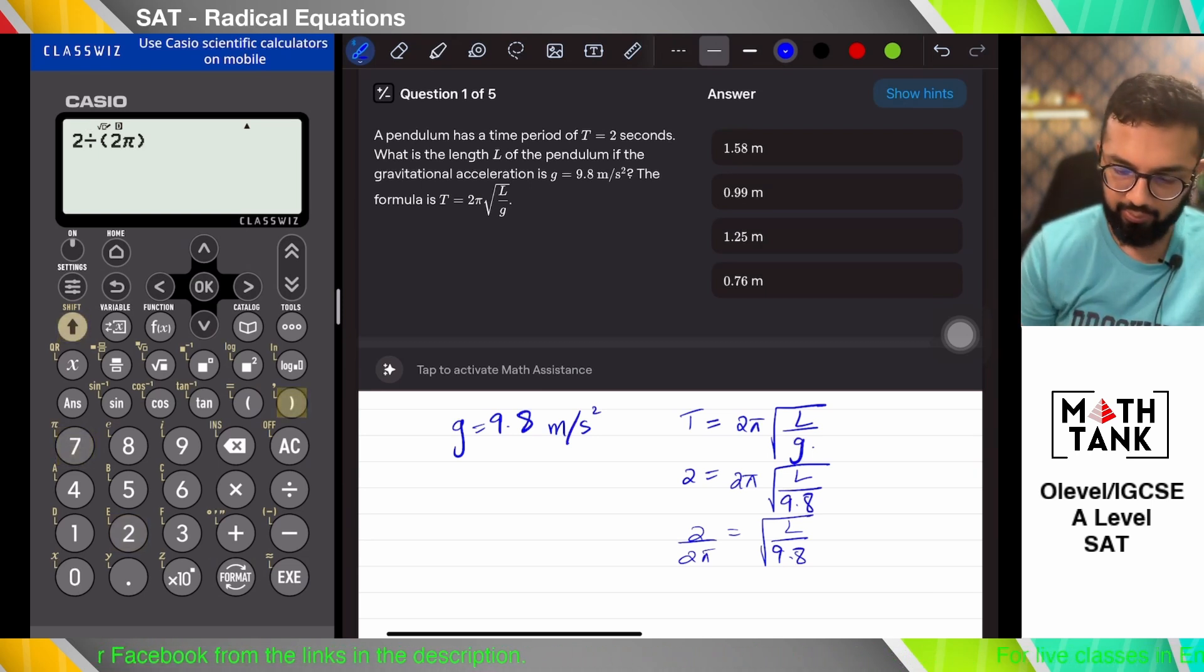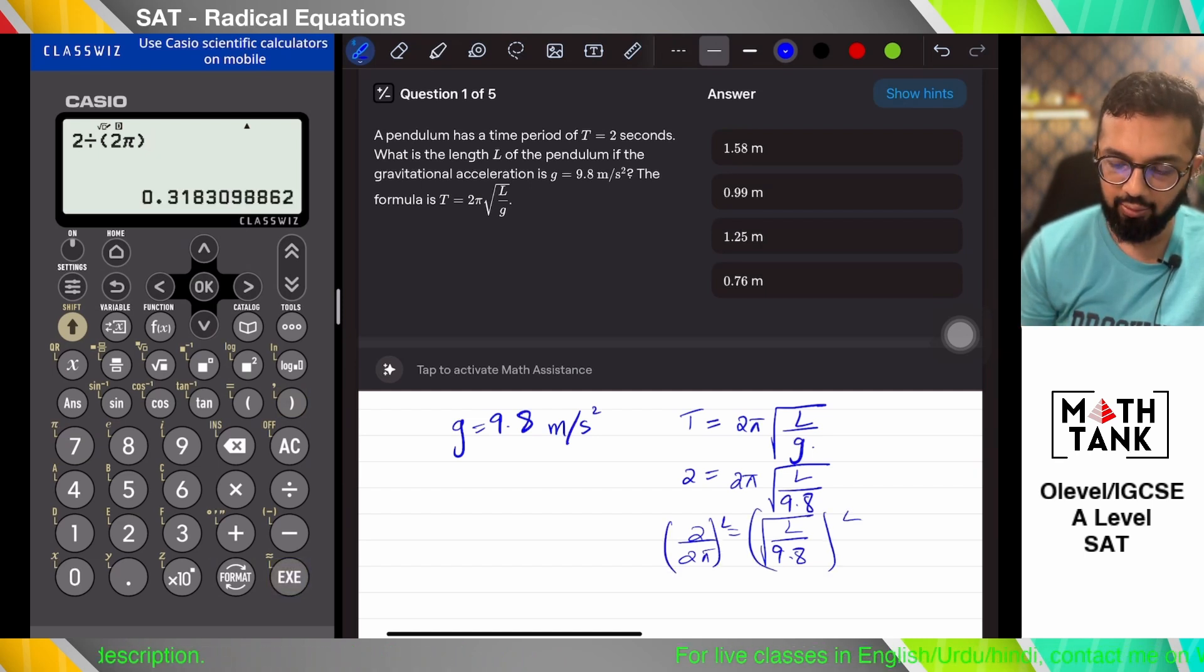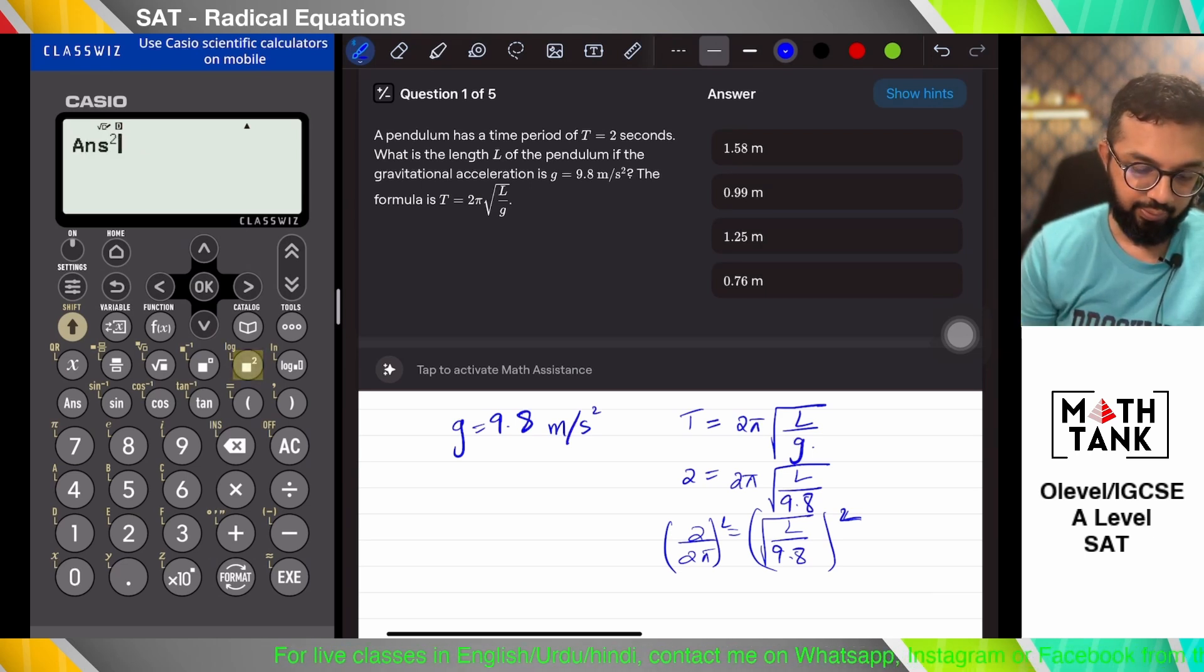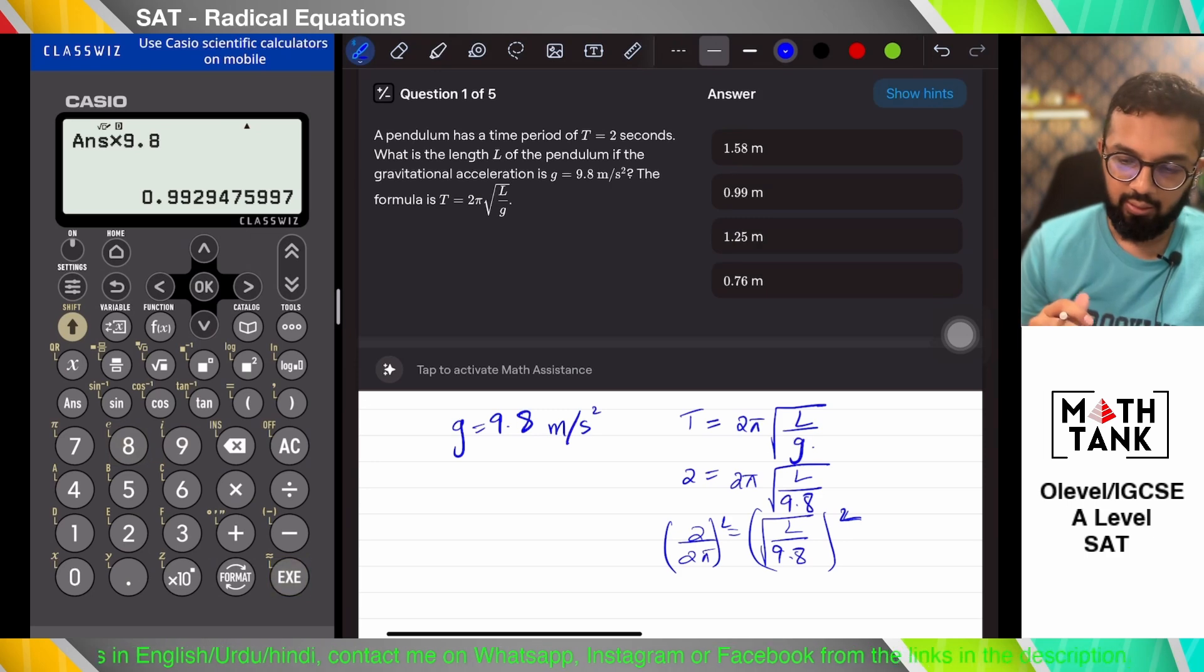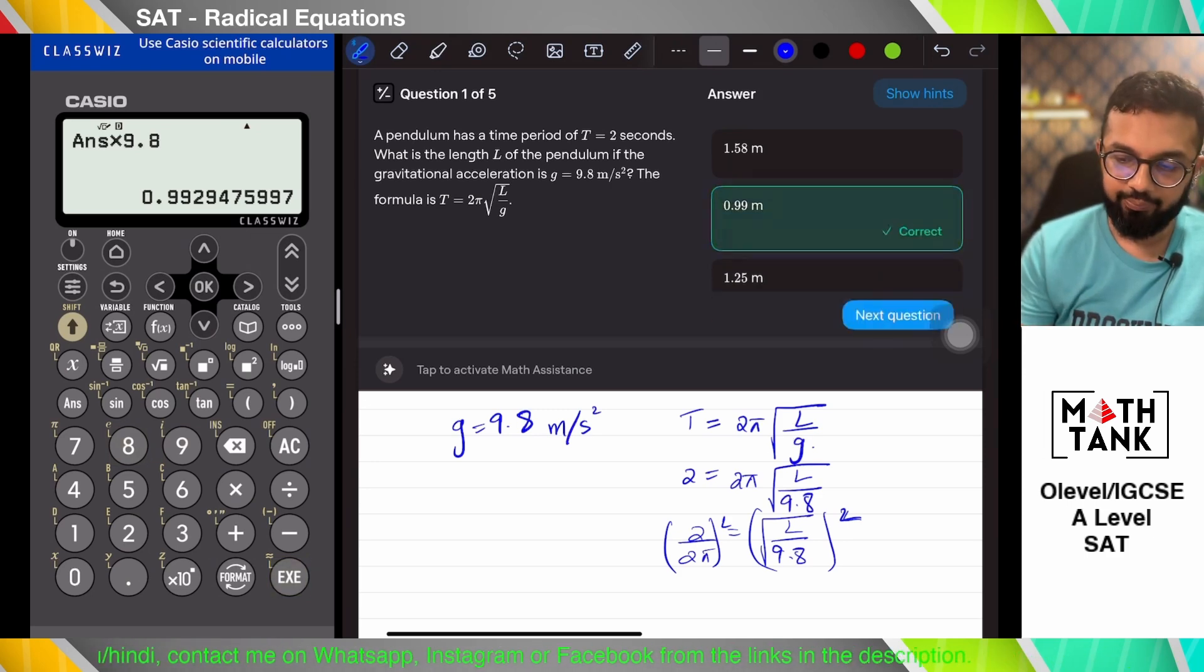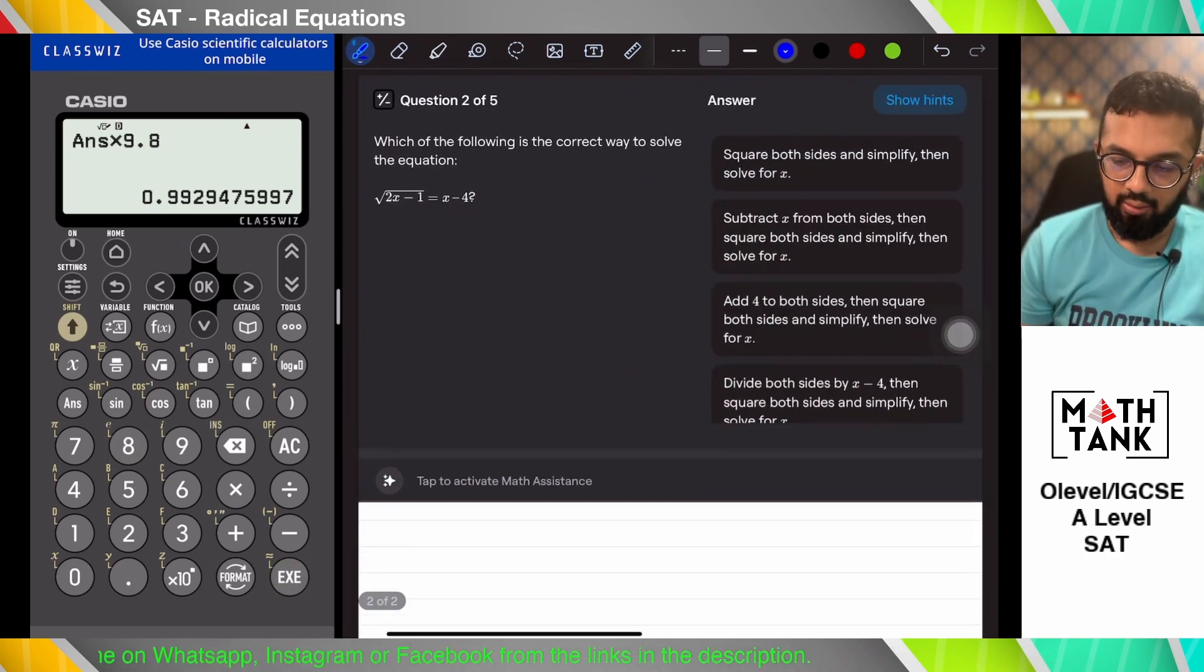Where is pi? The pi is here. 2 divided by 2 pi. Now then I have to square both sides and then cross multiply with 9.8 basically. So squared multiplied with 9.8. I'm getting 0.99.